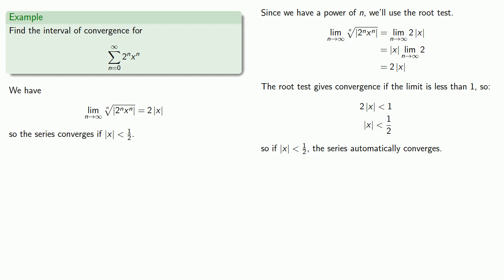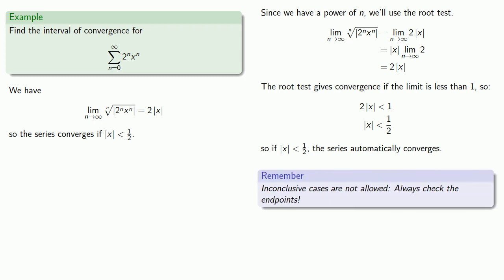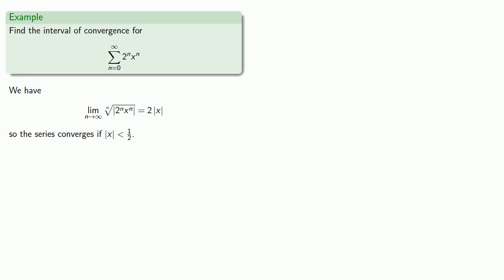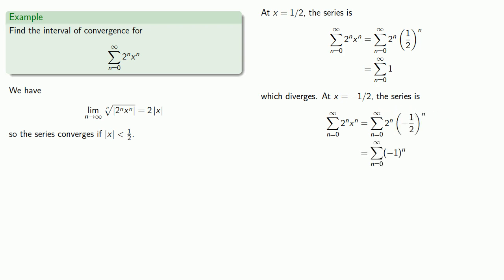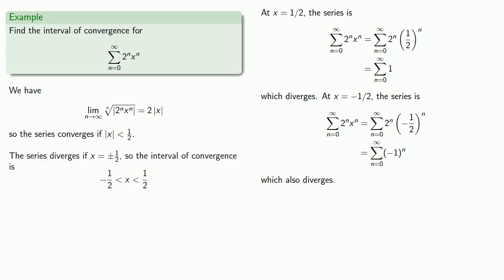The root test gives inconclusive results if the limit equals 1, but we're not allowed to leave inconclusive cases, so we need to check the endpoints. At x equals 1/2 the series diverges because its terms don't go to zero. At x equals negative 1/2 the series also diverges because the terms don't go to zero either. So neither 1/2 nor negative 1/2 should be in our interval of convergence, and the interval of convergence is just the open interval from negative 1/2 to 1/2, exclusive of the endpoints.